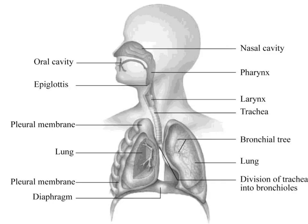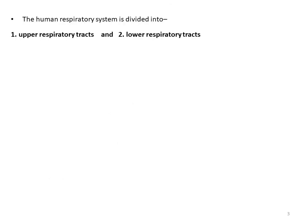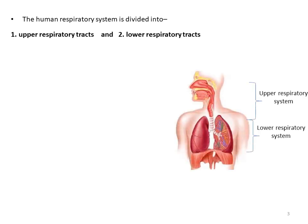This is the total respiratory system which starts from the oral cavity and which is connected with the nasal cavity, pharynx, larynx, trachea, bronchi, and finally to the lower parts of the lung. The human respiratory system is basically divided into two parts: upper respiratory tract and lower respiratory tract.